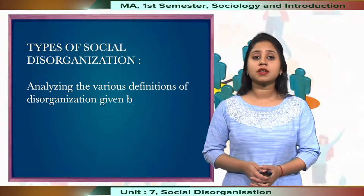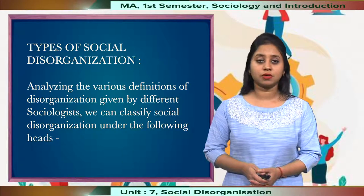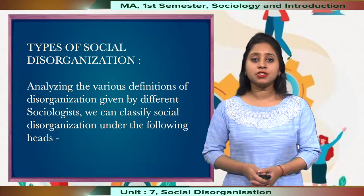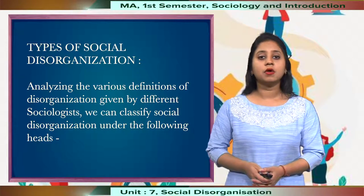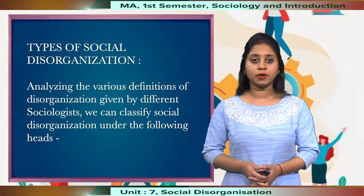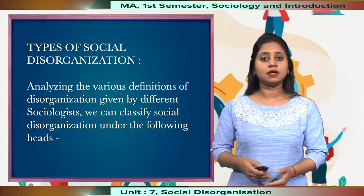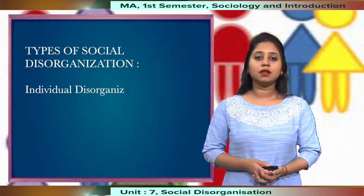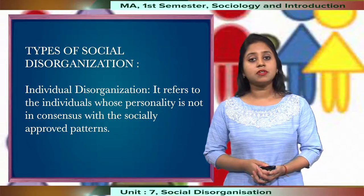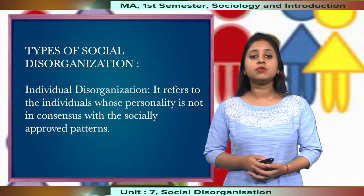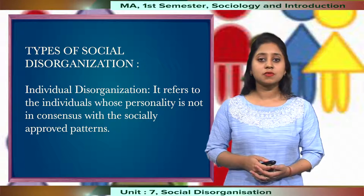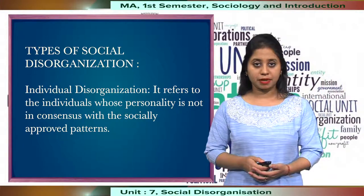Now let us discuss the different types of social disorganisation. By analysing the different definitions given by different sociologists, we can classify social disorganisation under the following heads. First of all, individual disorganisation — it refers to individuals whose personality is not in consensus with the socially approved patterns.